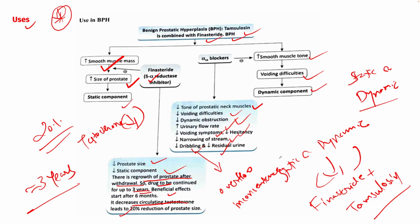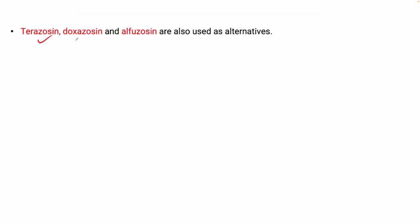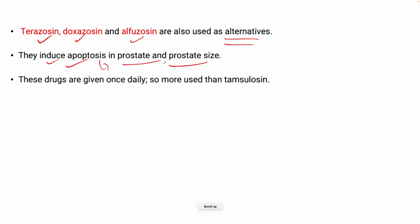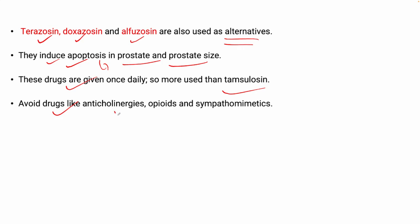Terazosin, doxazosin, and alfuzosin are used as alternatives. These drugs also induce apoptosis (programmed cell death) in the prostate, reducing prostate size, and are given once daily — making tamsulosin more commonly used. Avoid concomitant drugs like anticholinergics, opioids, and sympathomimetics.